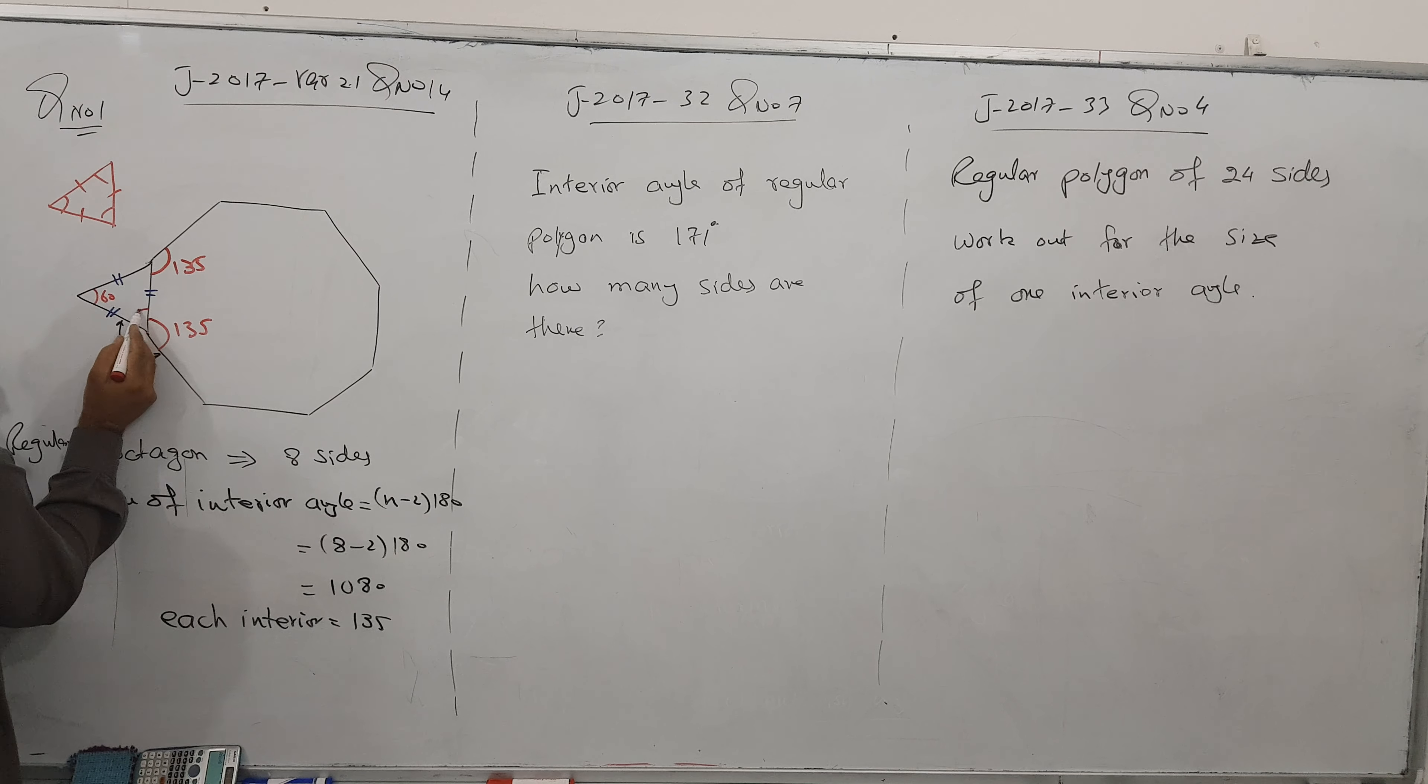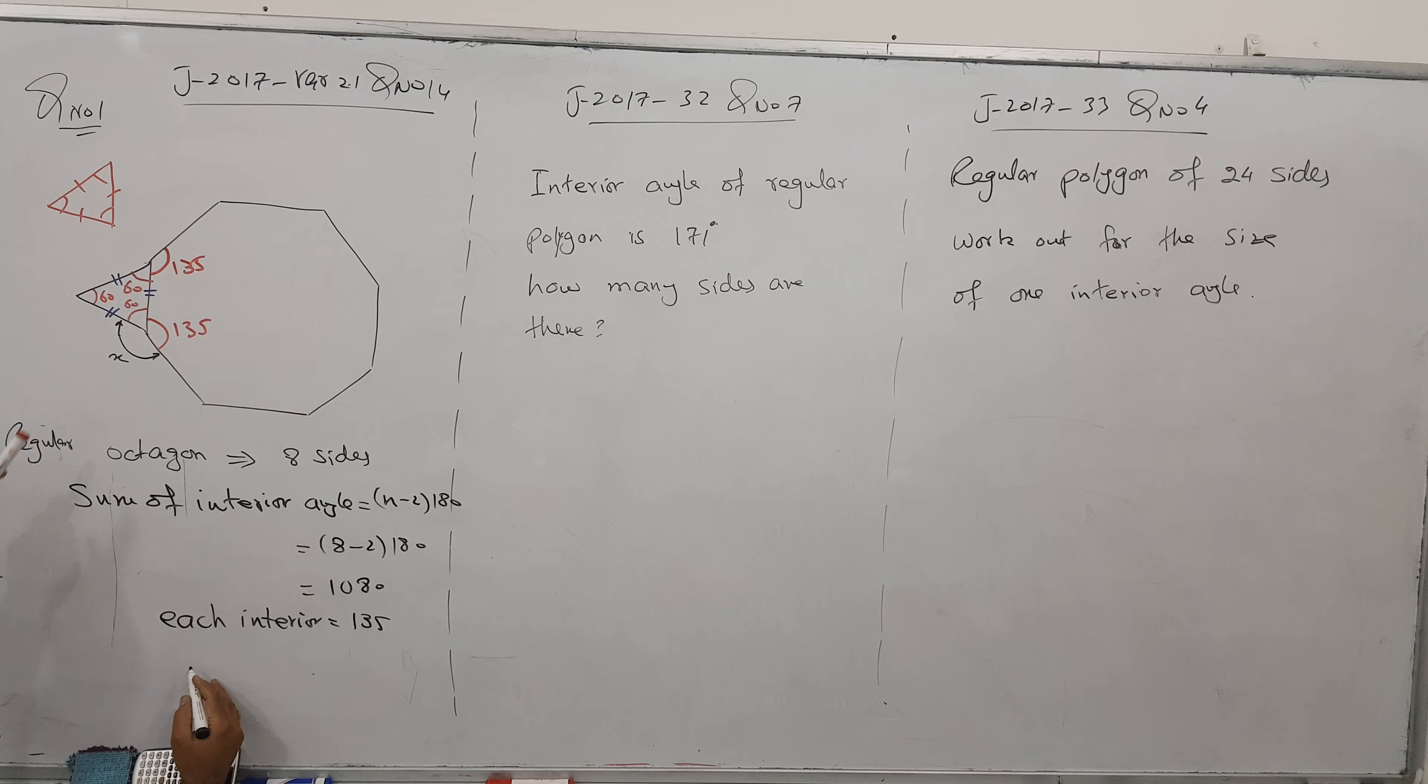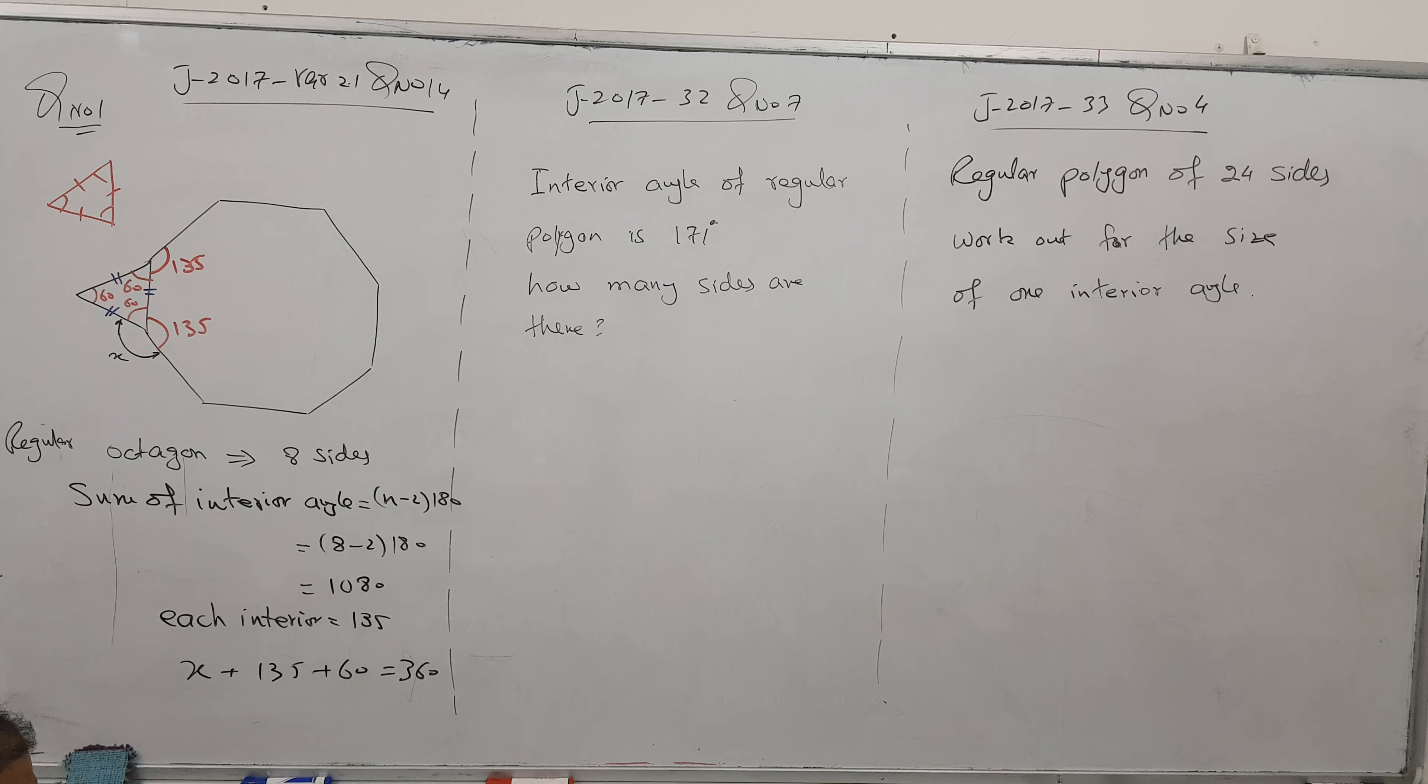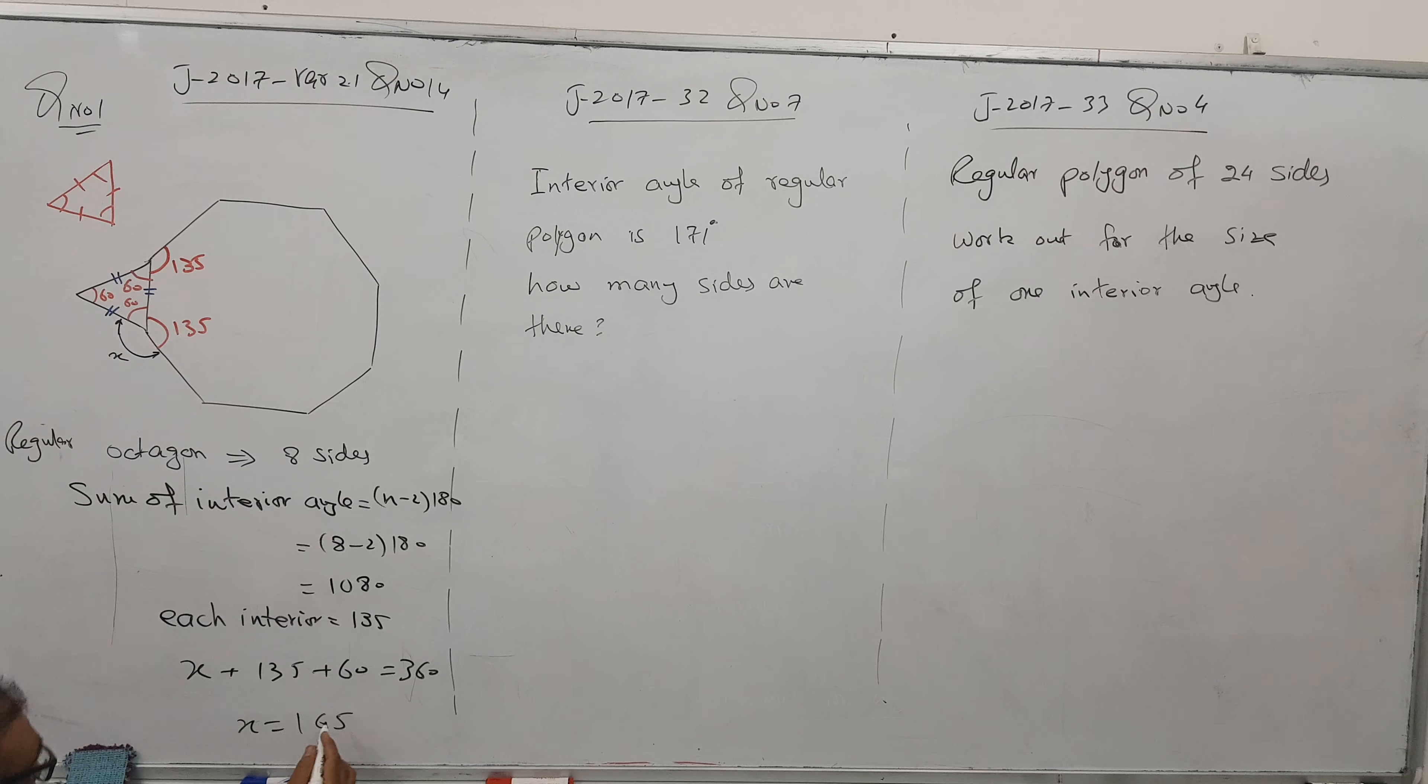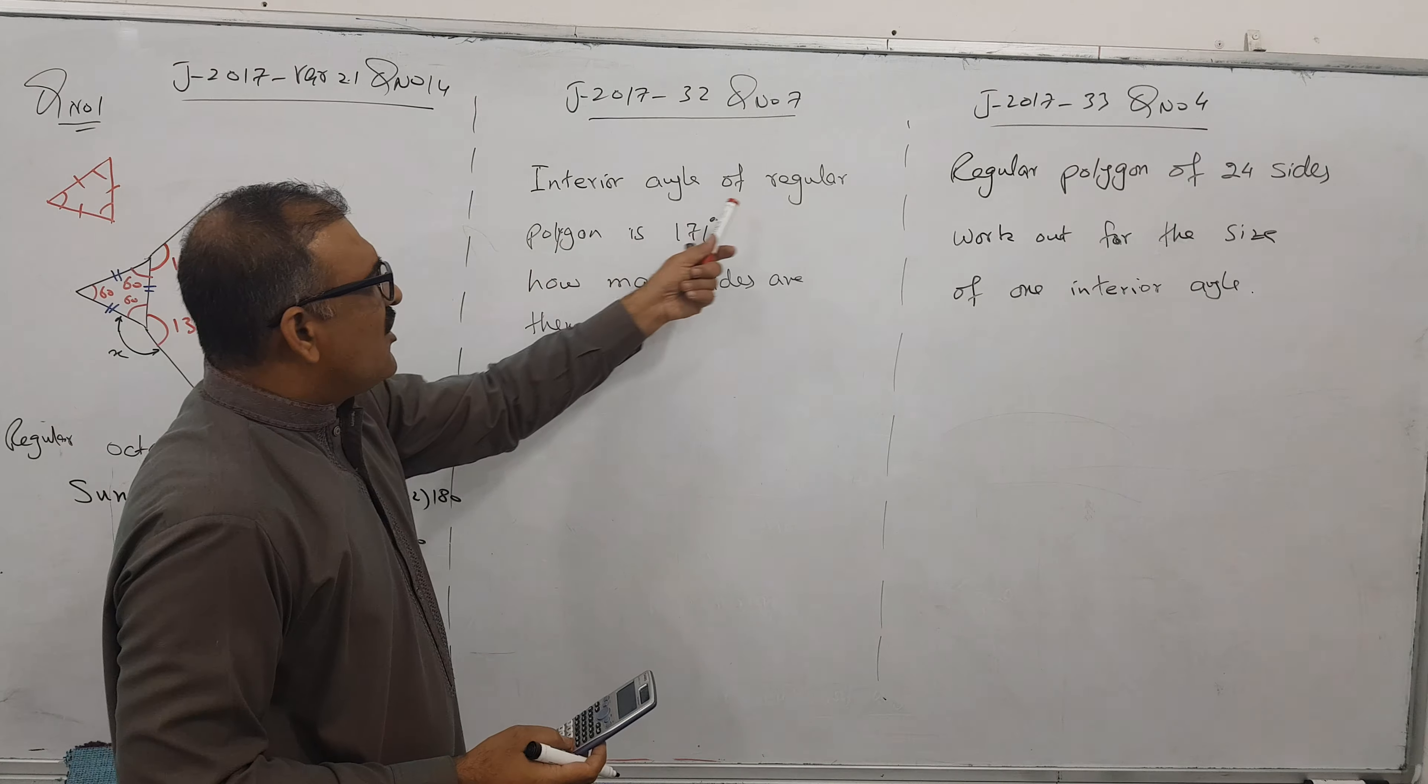Can you see these three angles? What is 360? So x plus 135 plus 60 equals 360. Let's find it: 360 minus 60 minus 60 minus 135 gives us 165. So this is 165 and the question is over.